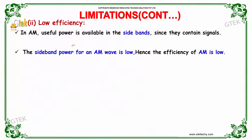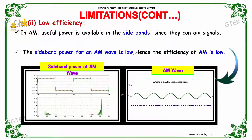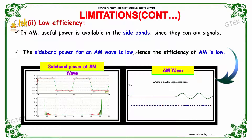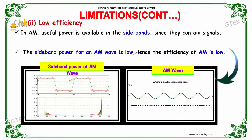The second limitation is low efficiency. In amplitude modulation, useful power is available in the sidebands, since they contain the signals. The sideband power of an amplitude modulated wave is really low, as you can see here. Hence, the efficiency of amplitude modulation is really low.